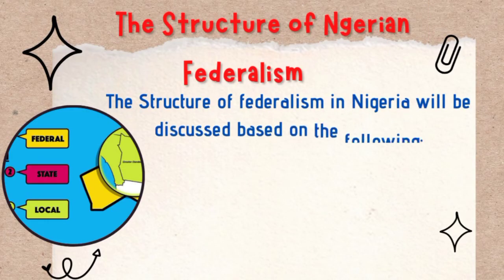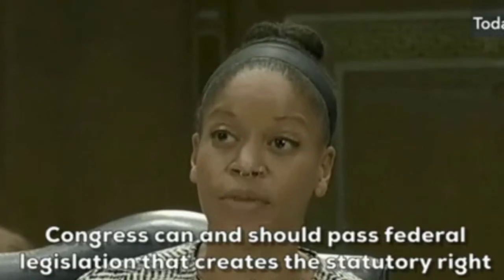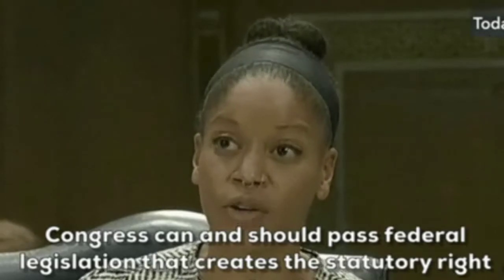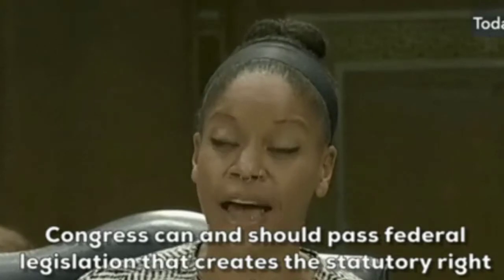Now let's look at the structure of Nigerian federalism under the following headings: one, federalism before independence; two, federalism from 1960 to 1966; three, federalism from 1967 to 1975; and four, federalism from 1976 to date. We shall take them one after the other.